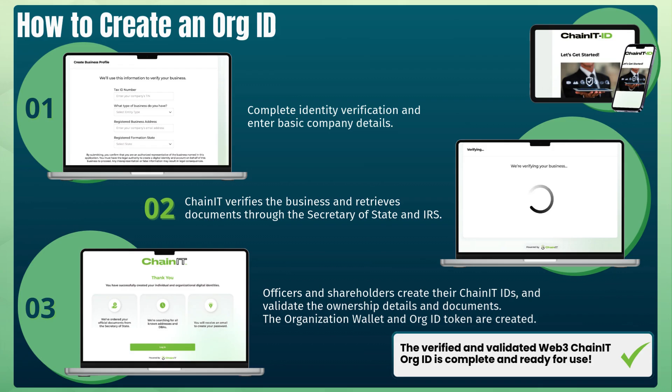First, you will complete the Individual Identity Verification and enter some basic details about your business. We will then verify these details directly with the Secretary of State and IRS and retrieve registration documents. Once the basic information is verified, invite officers and directors to validate the organization record and enhance your business level of verification.